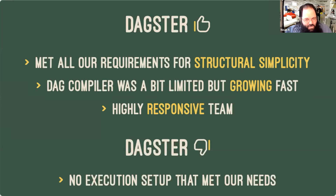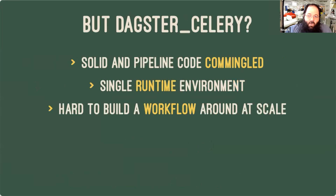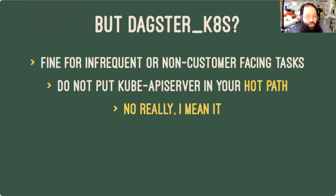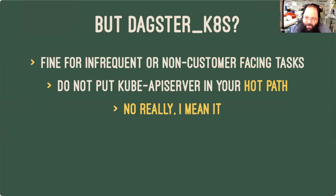Because we needed really high potential concurrency and much higher resiliency to failure, the default launcher and executor combos weren't going to cut it. We did look at Dagster Celery, since we knew we wanted Celery under the hood no matter what. Unfortunately, the workflow for that more or less requires that the code for all solids lives alongside the pipeline, or at least that all solids can be runnable together. That wouldn't really work well for us because of the widely varying hardware requirements for different solids. There's also Dagster Kubernetes, which launches Kubernetes jobs on the fly. This can be okay for infrequently executed jobs where failure delay doesn't have any customer-facing consequences, but I really suggest that you keep the Kube API server out of the hot path of your product — it's really just not built for that kind of thing.